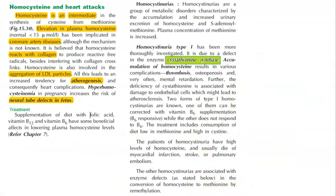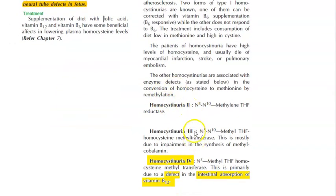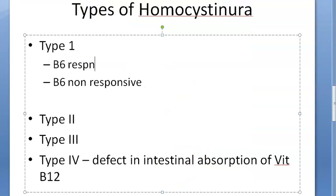There are many types of homocystinuria. Type 1 homocystinuria can be corrected with vitamin B6 supplementation — it is B6-responsive, so giving pyridoxine helps. Within type 1 there are two forms: one is vitamin B6 responsive and the other is not. Apart from type 1, you also have types 2, 3, and 4.